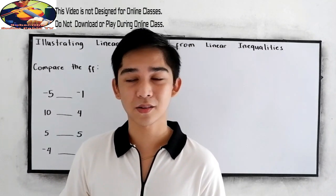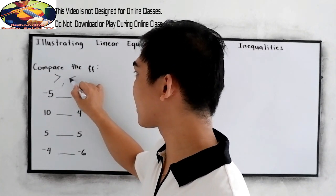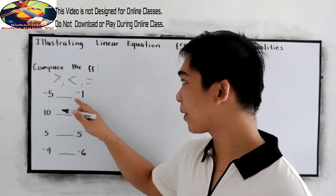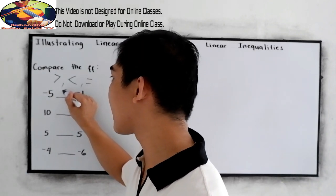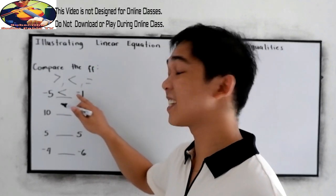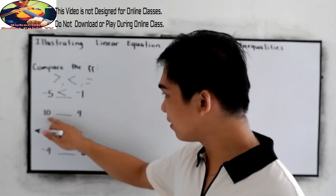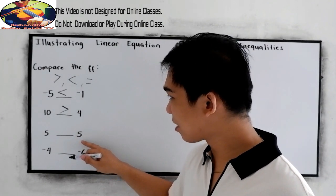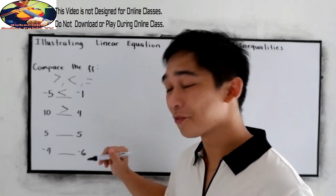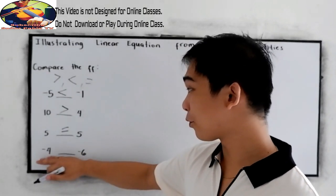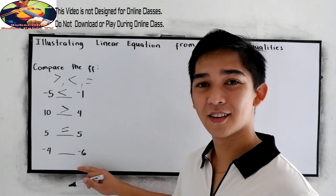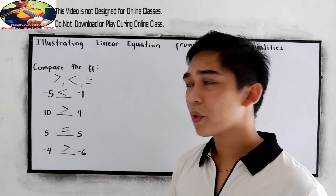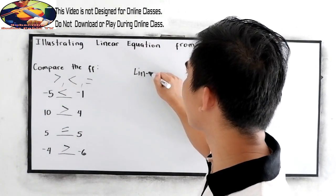In comparing numbers we use the following symbols: greater than, less than, or equal to. For example, negative 5 compared to negative 1 — negative 5 is less than negative 1. Number 2: 10 compared to 4 — 10 is greater than 4. Number 3: 5 compared to 5 — 5 is equal to 5. Number 4: negative 4 compared to negative 6 — negative 4 is greater than negative 6.